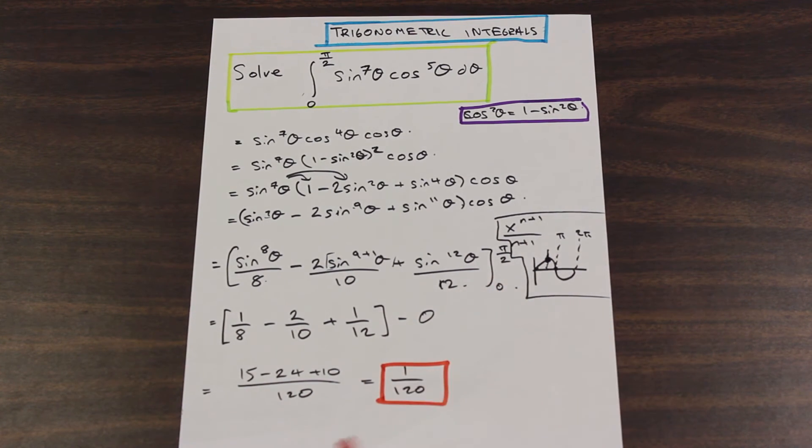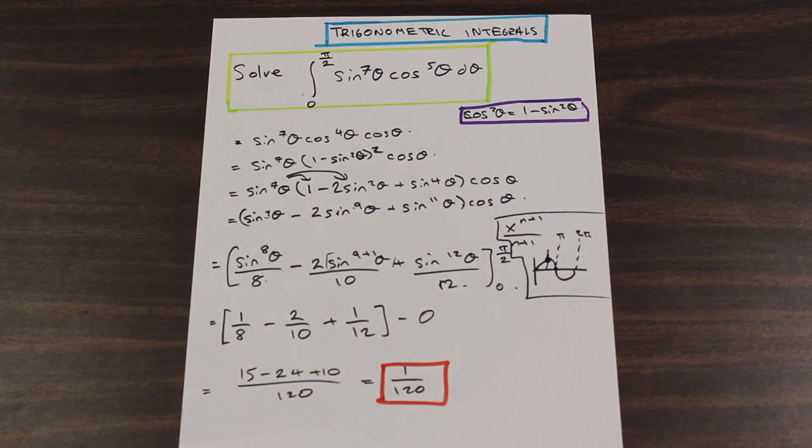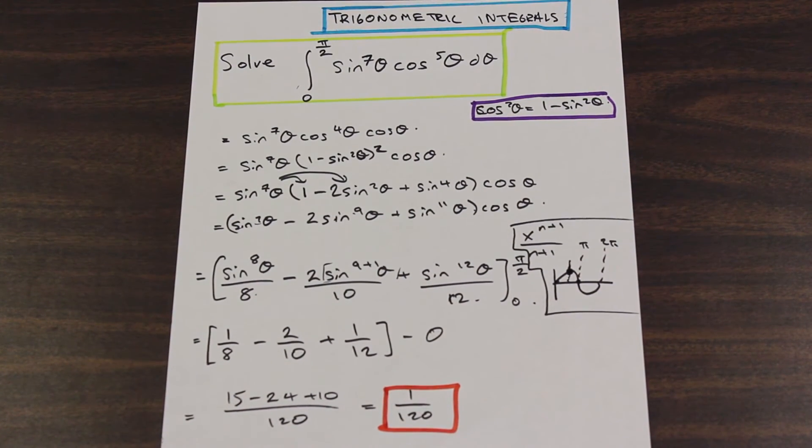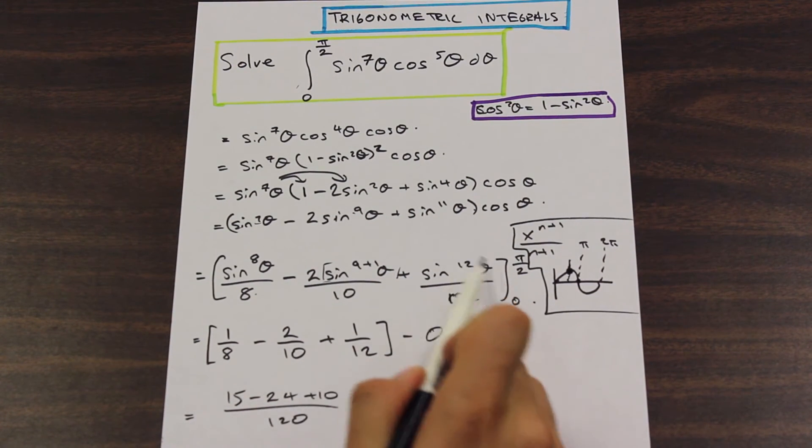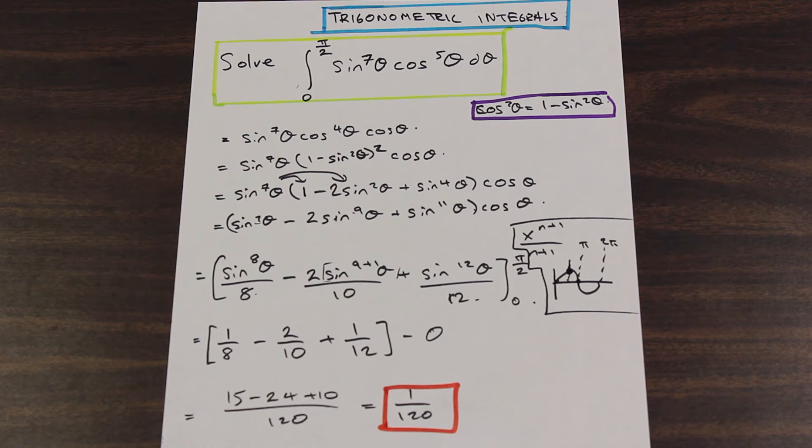The reason why we evaluated it here is because we were given bounds. It was a definite integral. If it's very possible that they don't give you any bounds and they give you an indefinite integral, at which point you would just leave the problem at this step and add a plus C. So that would be the difference.